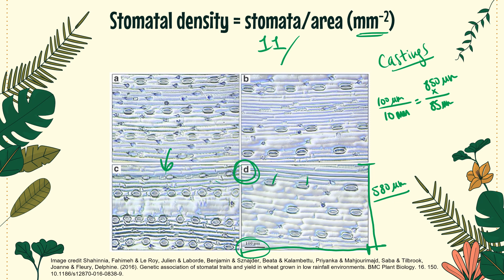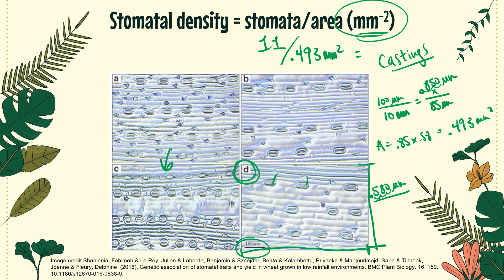To find area, convert micrometers to millimeters by dividing by 1000: 850 μm = 0.85 mm and 580 μm = 0.58 mm. Area = 0.85 × 0.58 = 0.493 square millimeters. Stomatal density = 11 stomata ÷ 0.493 mm² = approximately 22 stomata per square millimeter. The negative exponent in the units indicates division. Rounding to two significant figures gives 22 stomata mm⁻².